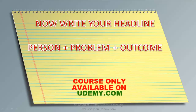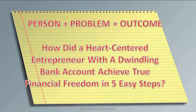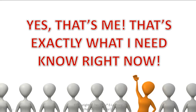Now that you've done all of that, you want to write your headline, because now you know the person, the problem, and the outcome they're looking for. So: person plus problem plus outcome — that is your headline formula. For example: 'How did a heart-centered entrepreneur with a dwindling bank account achieve true financial freedom in five easy steps?' You can see how this connects — heart-centered entrepreneurs are the person, a dwindling bank account is the problem, and achieving true financial freedom in five easy steps is the outcome.